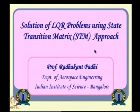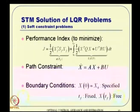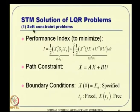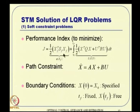The next topic is the state transition matrix approach as an alternative to the Riccati matrix approach for solving LQR problems. There are two formulations: soft constraint and hard constraint. The soft constraint problem formulation and objective are exactly the same as what we have been discussing - minimize the cost function subject to system dynamics, with x(tf) as a free variable that we try to drive close to 0 depending on the weighting matrices chosen.